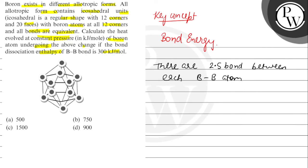For one bond, it is 300 kJ per mole. So delta H for this reaction will be equal to 2.5 times 300, which equals 750 kJ per mole.